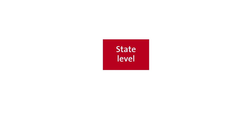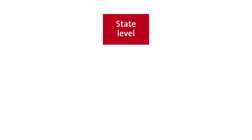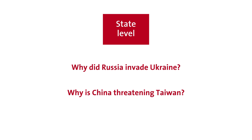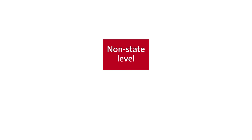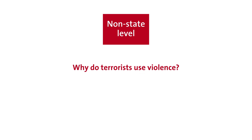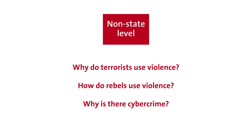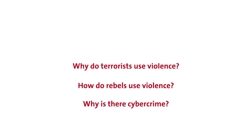First, from a state angle — why did Russia intervene in Ukraine? Why is China threatening Taiwan? And then from a non-state level: why do terrorists use violence? How do rebels use violence? Why is there cyber crime?